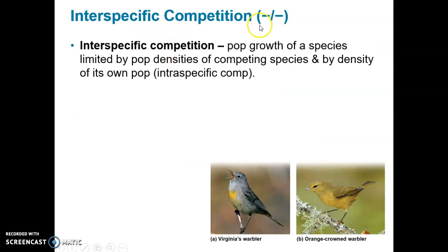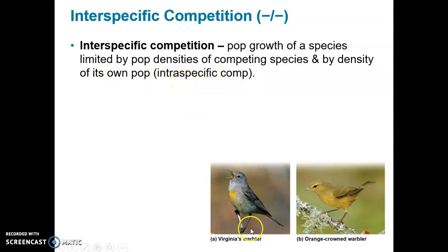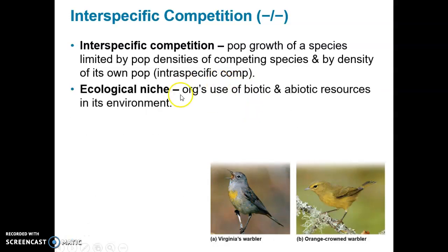Interspecific competition with a negative-negative result means both populations can be limited by the population densities of competing species. If there are two bird species, the population growth of one can be hindered if the other competing species' population is high enough to affect it negatively, especially if they're sharing similar resources — and even by the density of its own population. Interspecific competition between members of the same species can be harmful if their population numbers get too high.